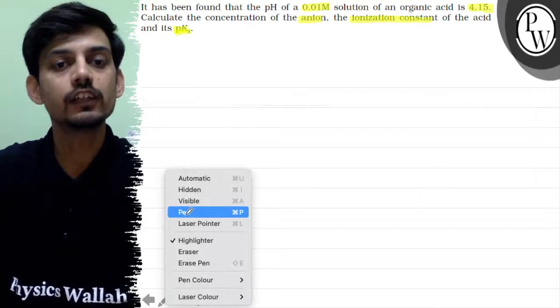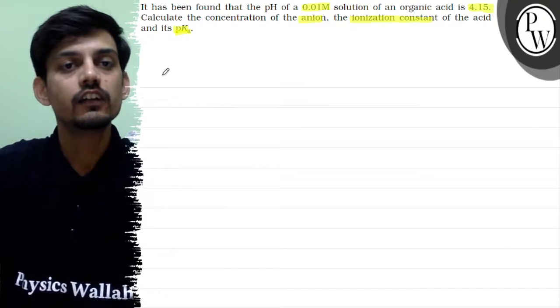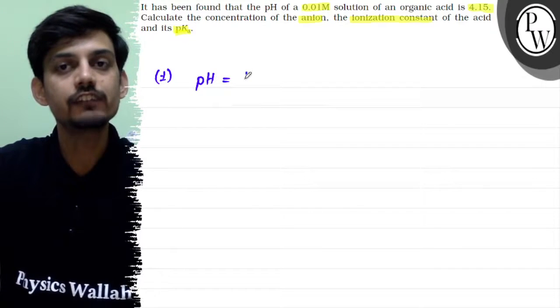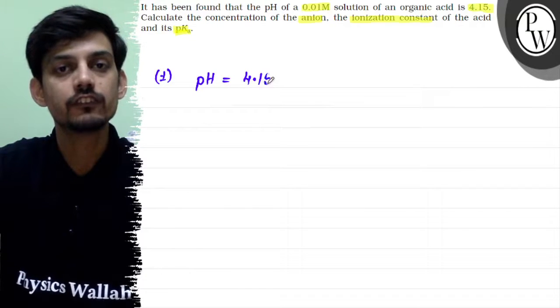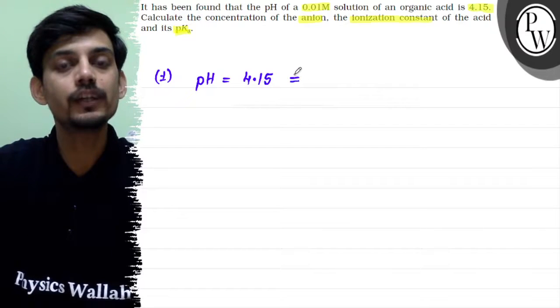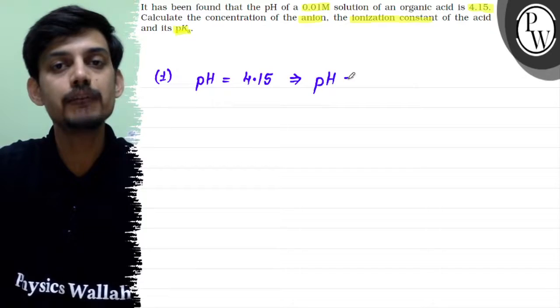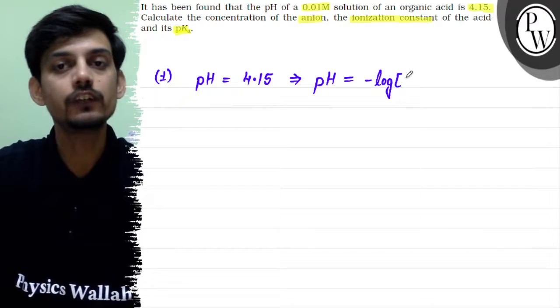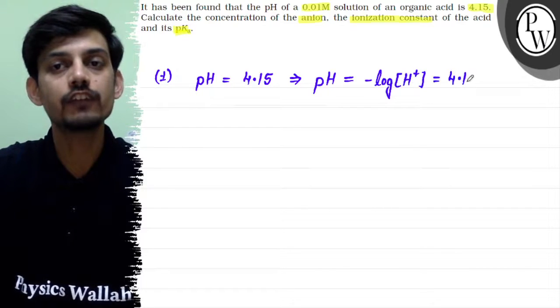The first thing given to us is the pH of the solution, which is 4.15. pH means potent of hydrogen, and we calculate any quantity's potent by taking the minus log value. So pH equals minus log of H plus ion concentration, and this is given as 4.15.